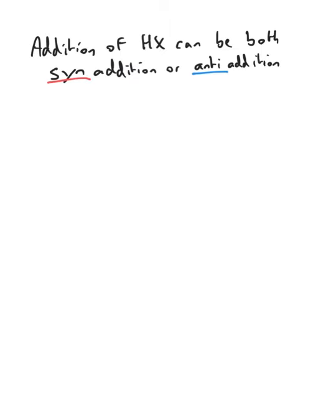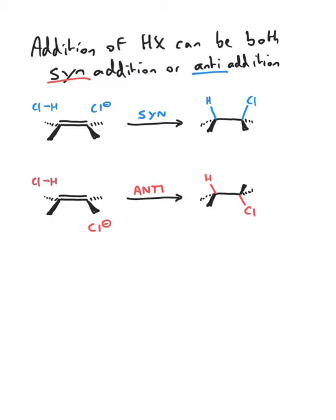The addition of a hydrogen halide to an alkene can be either syn addition or anti-addition. Syn addition, we will see a proton and a chlorine add to the same face, of course, in a two-step procedure,